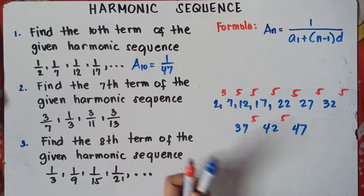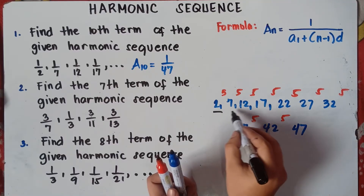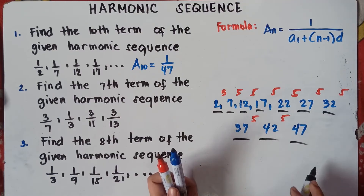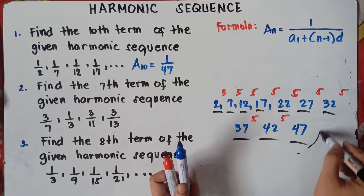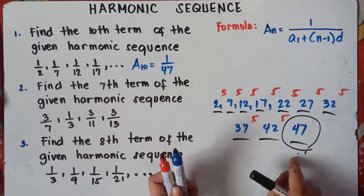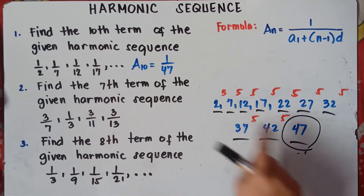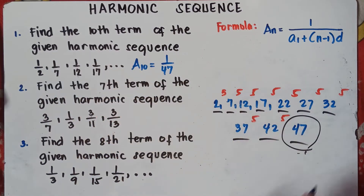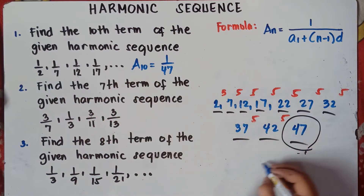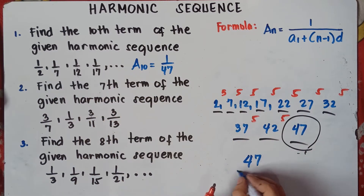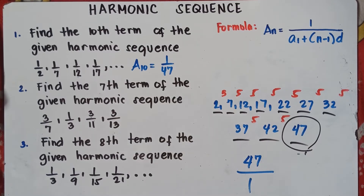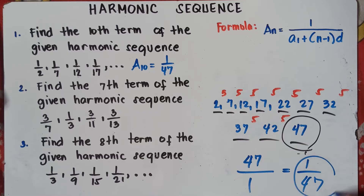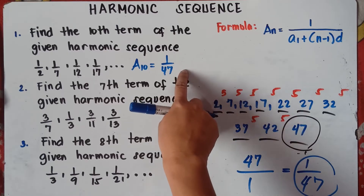Counting to the 10th term: the 10th term of the arithmetic sequence is 47. Since we're looking for the harmonic sequence, get the reciprocal of 47 — understood that 47 has a denominator of 1 — so the reciprocal is 1 over 47. That's why we get 1 over 47.